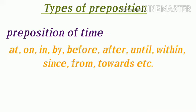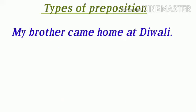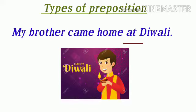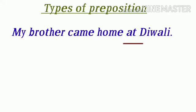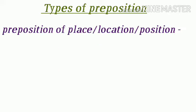तो चलिए देखते हैं types of preposition. पहला है preposition of time — वो words जो समय को बताने के लिए यूज़ किये जाते हैं, जैसे at, on, in, by, before, after, until, within, since, from, towards, etc. ऐसे कई सारे और भी preposition हैं जो समय को sentence में बताने के लिए यूज़ किये जाते हैं। जैसे: My brother came home at Diwali — मेरा भाई दिवाली पर घर आया था। यहाँ पे 'at' है preposition of time।